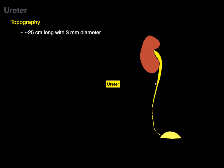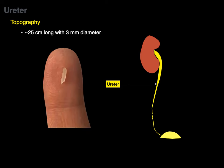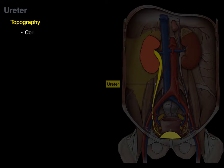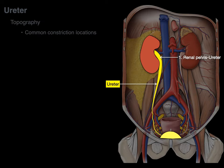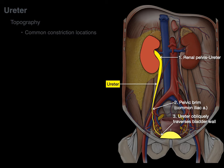The ureter is about 25 centimeters long and three millimeters in diameter — about the thickness of a grain of rice. The lumen has three common constriction locations: where the renal pelvis becomes the ureter, where the ureter crosses over the pelvic brim at the bifurcation of the common iliac arteries, and where the ureter obliquely traverses the bladder wall. These are where kidney stones can be occluded.